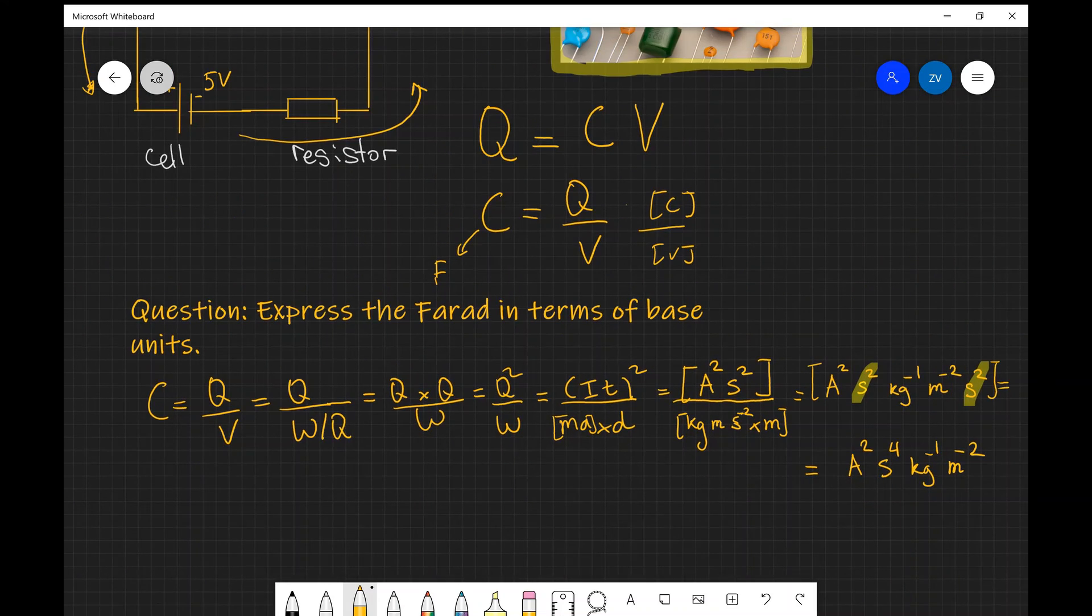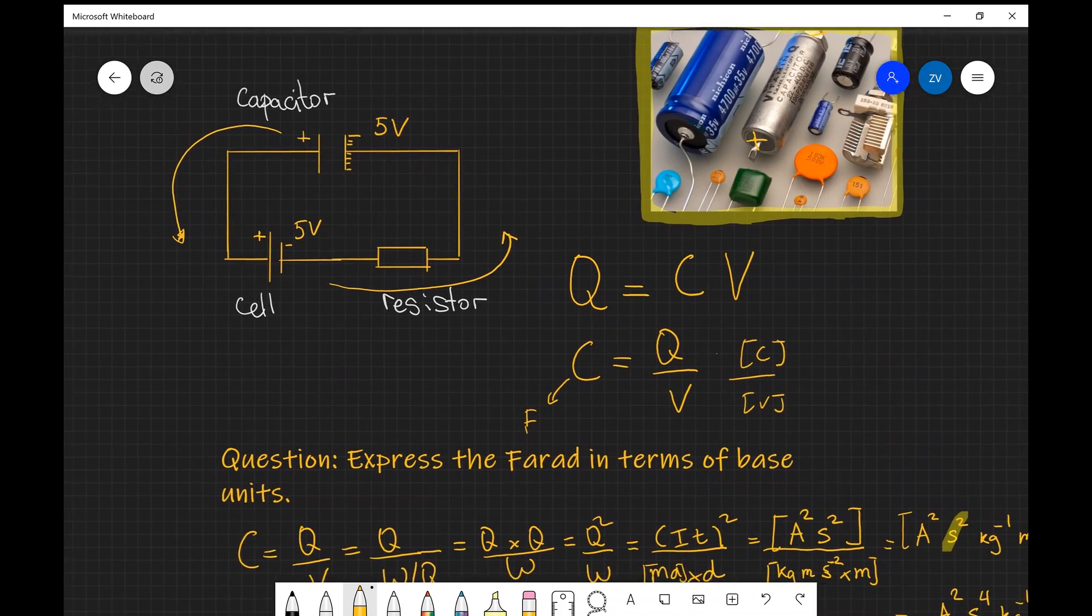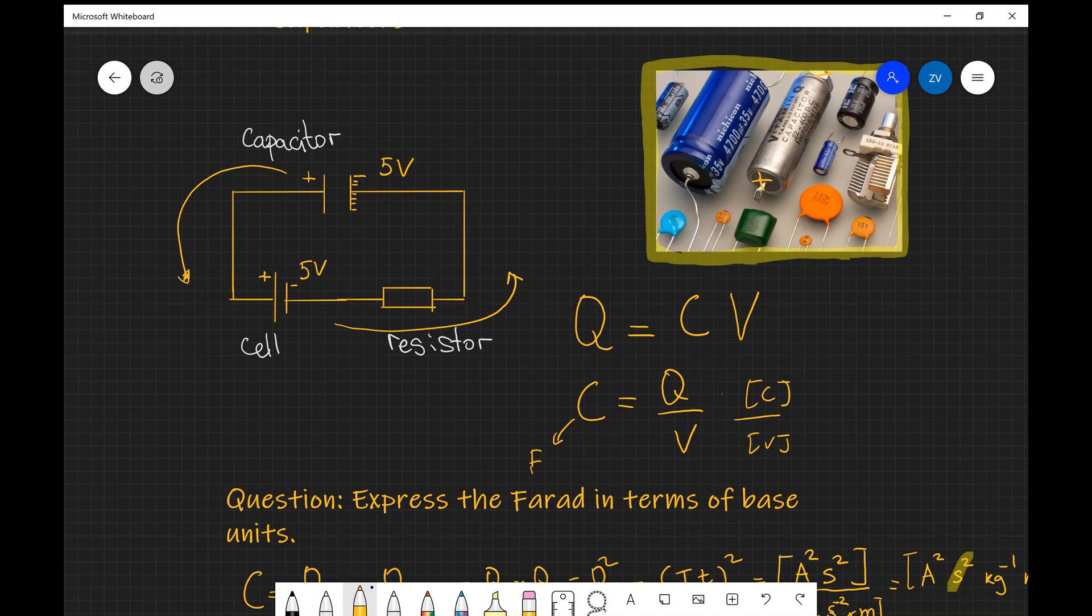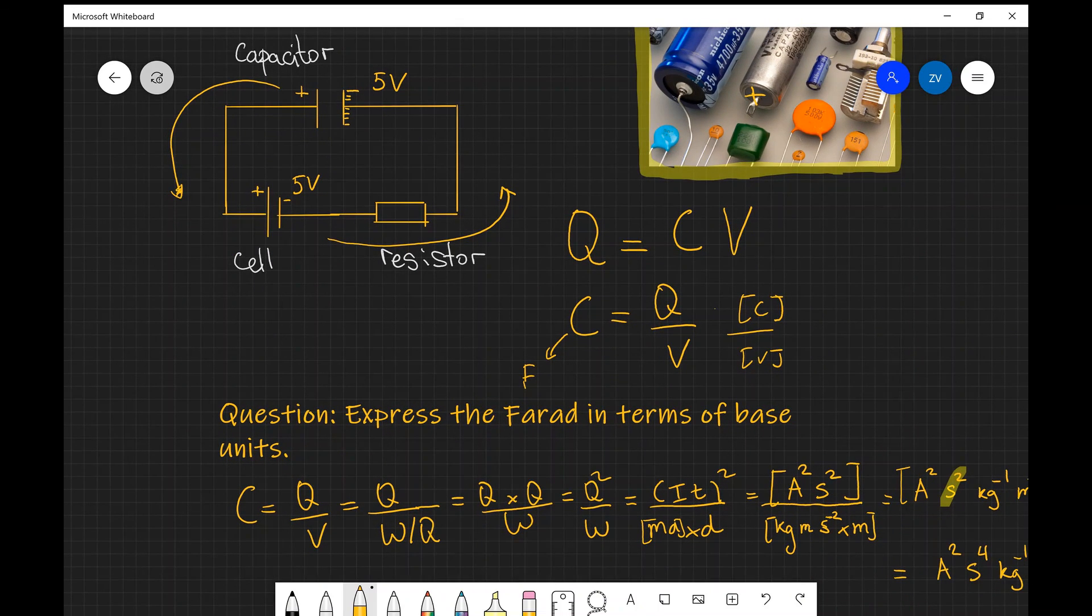Now, just to summarize what we looked at today: these new electrical components that store electrical energy are known as capacitors. They have a positive plate and a negative plate. The symbol for a capacitor is essentially two parallel lines of equal size connected to a circuit.